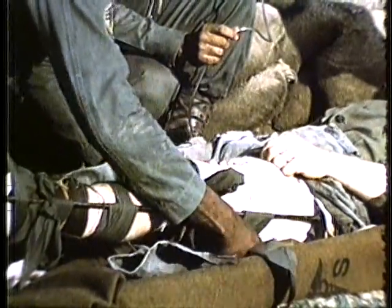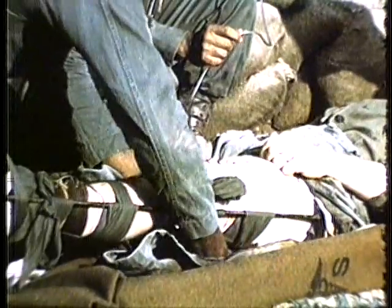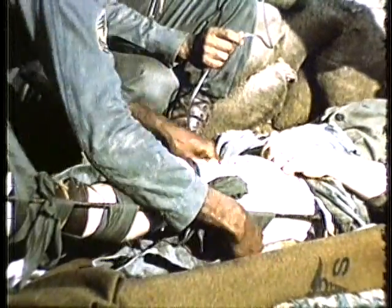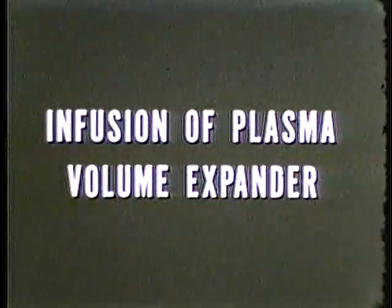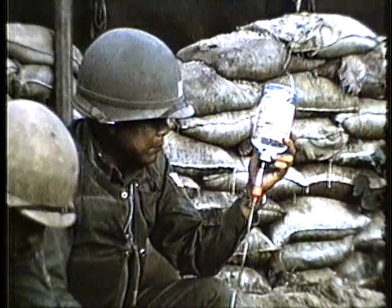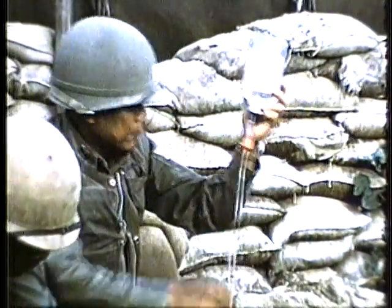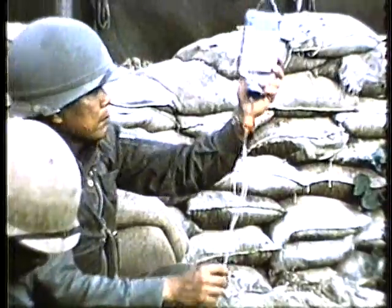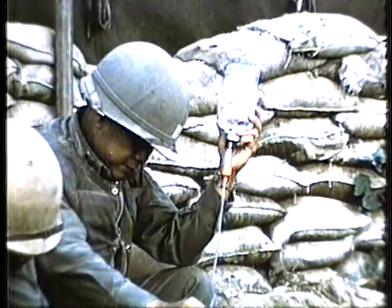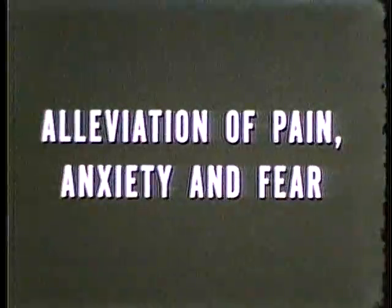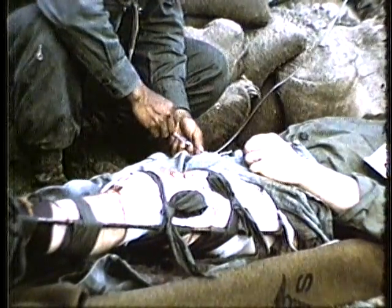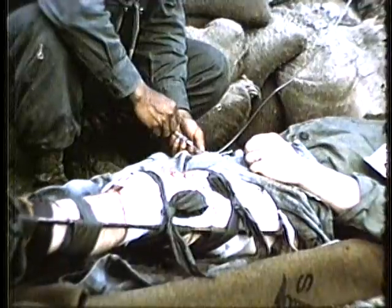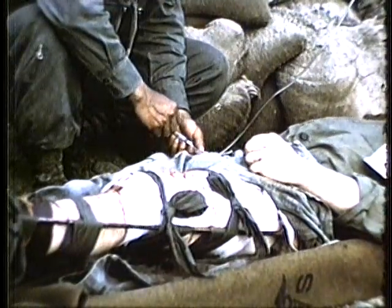If a tourniquet has already been applied, the doctor should release it and evaluate the character of the bleeding — a pressure dressing may suffice, eliminating the dangers of an unnecessary tourniquet. Infusion of a plasma volume expander such as dextran aids in the restoration of blood volume until whole blood is available. When valid pain exists, a small dose of morphine intravenously may be necessary, as absorption from subcutaneous tissue is unreliable.